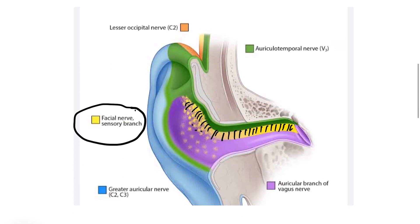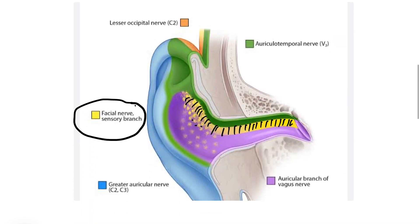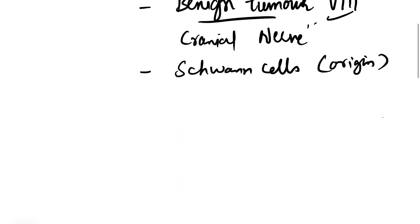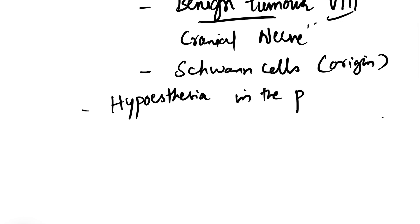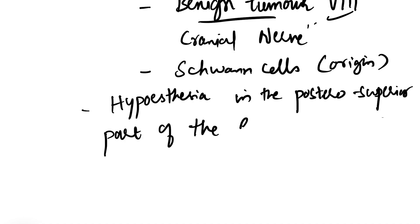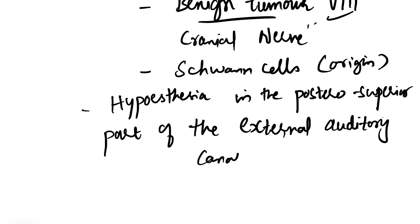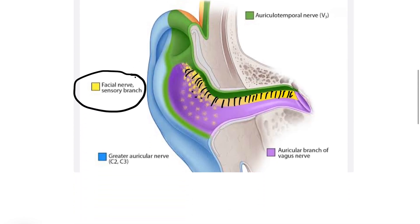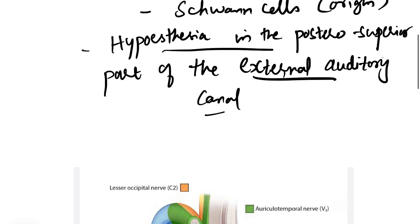So when this facial nerve is compressed, the sensations of this particular part are compromised. What we see is hypoesthesia or paresthesia, that is the partial loss or loss of sensation in the posterior superior part — and sometimes even the medial part — of the external auditory meatus, or external auditory canal. So there is a decreased sensation in this external auditory canal.